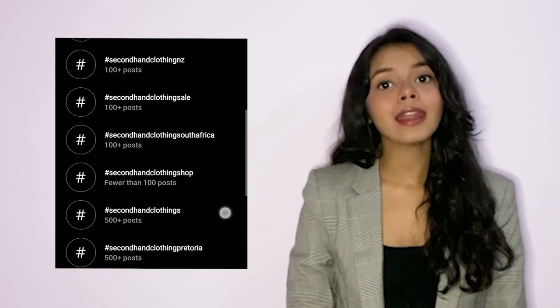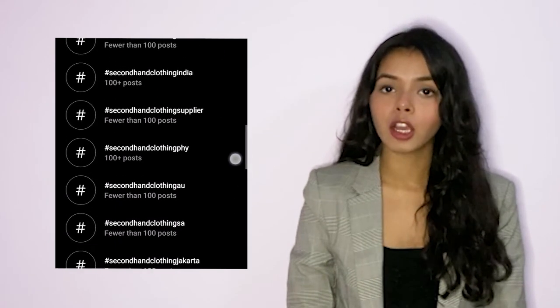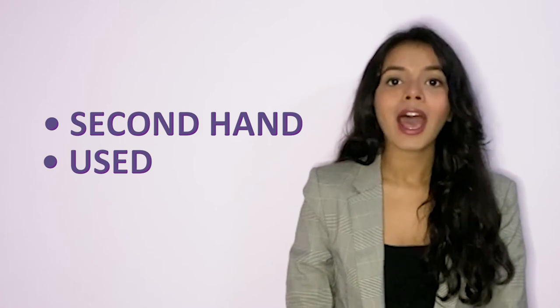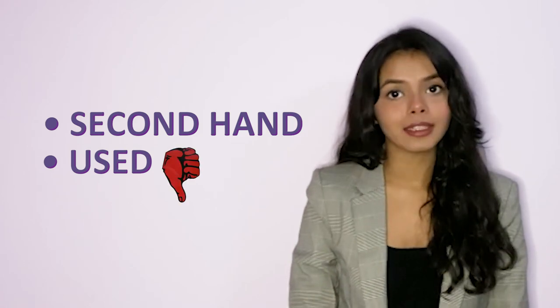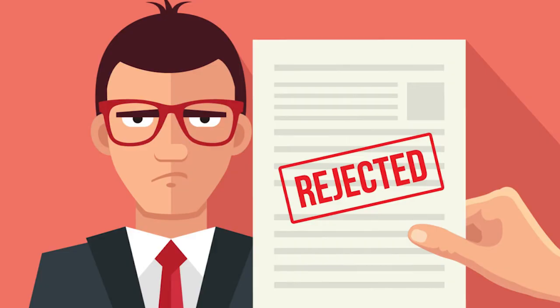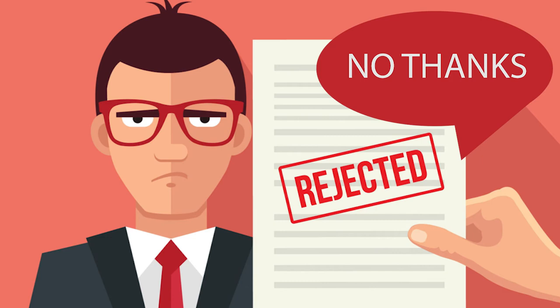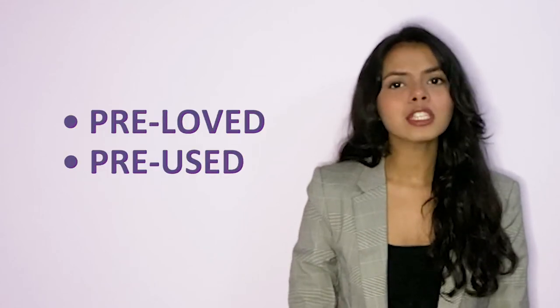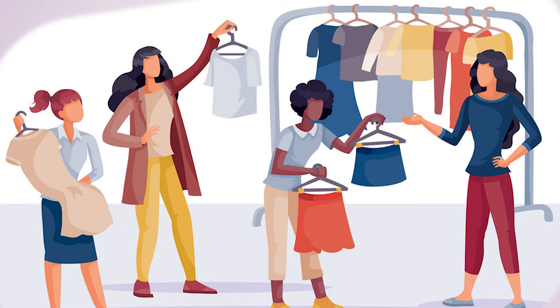Let me explain with an example. Say you are selling second-hand clothing on social media. Words such as 'second hand' or 'used' have a negative connotation. It may sound cheap and may deter people from buying such items. On the other hand, if you use words such as 'pre-loved' or 'pre-used,' this may provoke people to buy these goods as the connotation is much more positive. In this way, news stories can also be twisted in a good or bad way.